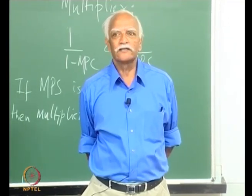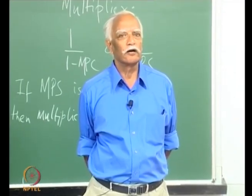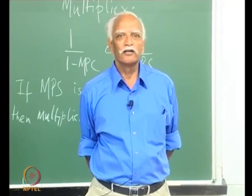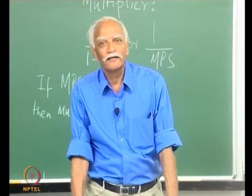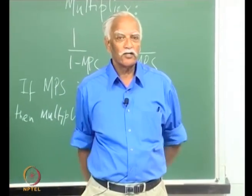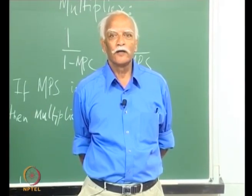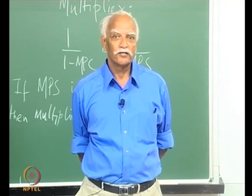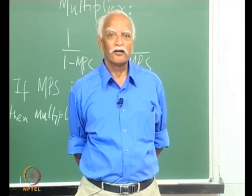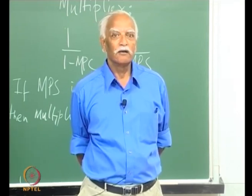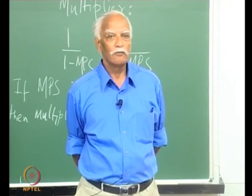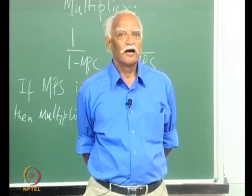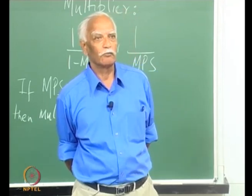This marginal propensity to consume lay somewhere in the range of 0 to 1 — in other words, you could spend all your income or not anything at all. More typically, Keynes assumed that whether people earned money or not, they had a minimum necessity to spend because they needed to live on. So the marginal propensity to consume varied according to income, but there was a level of consumption which existed even if income were to be zero.